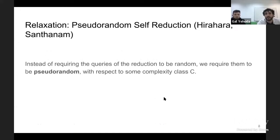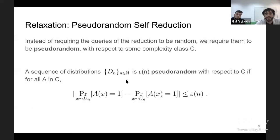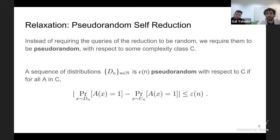Non-adaptive means future queries cannot depend on previous queries of the reduction. The proof idea is that if a language L in NP admits a non-adaptive random self-reduction, then we can construct an AM/poly protocol for the complement of L. These results were later improved by Bogdanov and Trevisan.